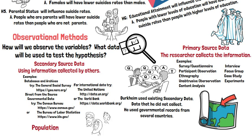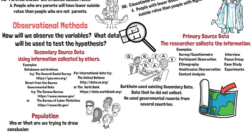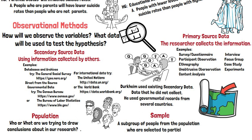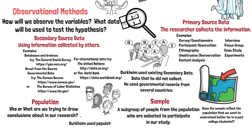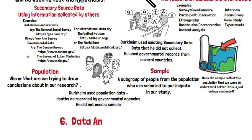Researchers will make a distinction between the population and a sample. The population is who or what we are trying to draw conclusions about in our research, whereas a sample is a subgroup of people from the population selected to participate in a study. An important question is whether the sample reflects the population we want to understand better. Durkheim used population data as recorded by a government agency, so he did not need a sample.